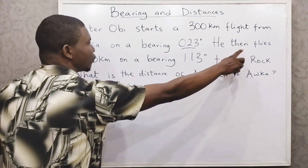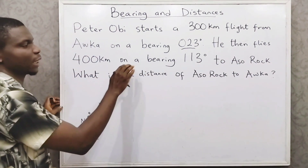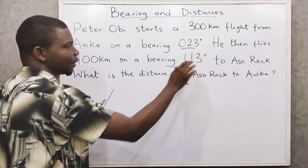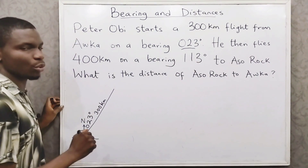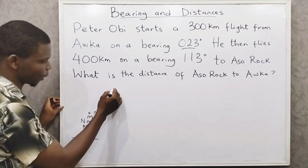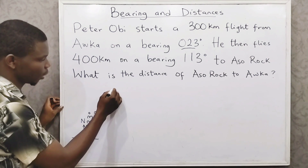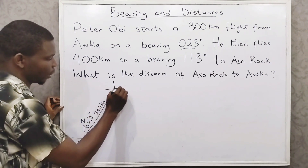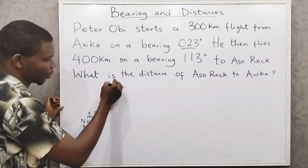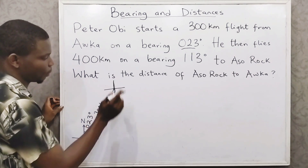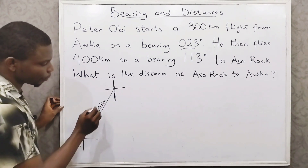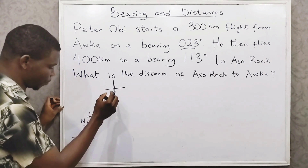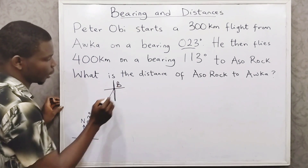He then flies 400 kilometers on a bearing of 113 degrees to Asurok, so he gets to this intermediate point. We are not told what this point is, but let me also indicate the four cardinal points here and call this point B.